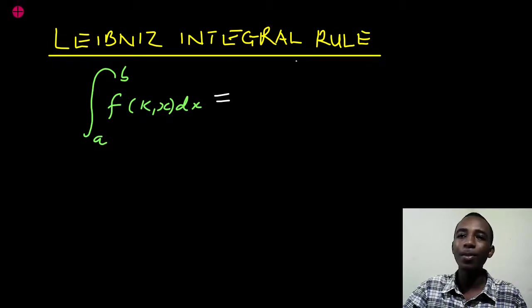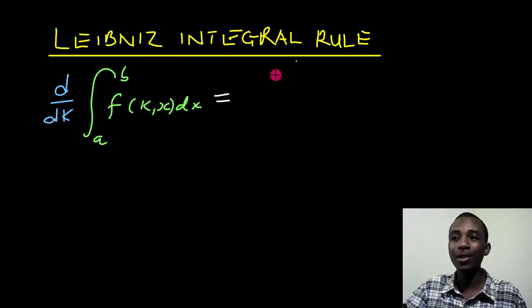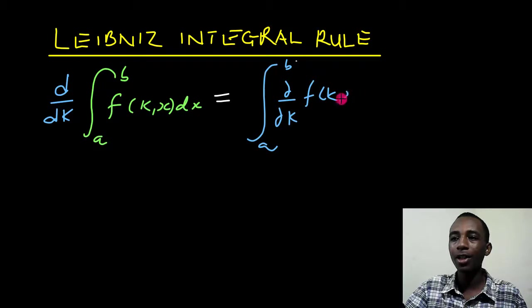let's suppose I take derivatives with respect to k here, then this is going to be the same as the integral from a to b, but now taking the partial derivative of this function k, x, with respect to x.